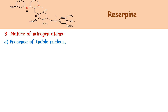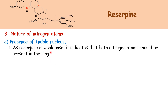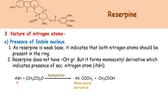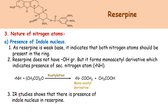The first is the presence of indole nucleus. As reserpine is a weak base, that indicates that both nitrogen atoms should be present in the ring. Both nitrogen atoms are present in the ring, therefore reserpine is a weak base. Reserpine does not have a hydroxy group, but it forms a monoacetyl derivative, which indicates the presence of a secondary nitrogen atom, that is the presence of an NH group. This is the acetylation reaction for secondary amine and it gives a monoacetyl derivative.